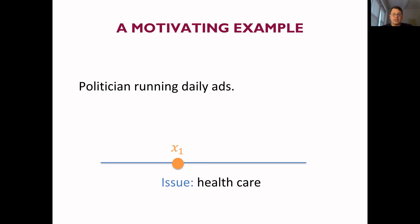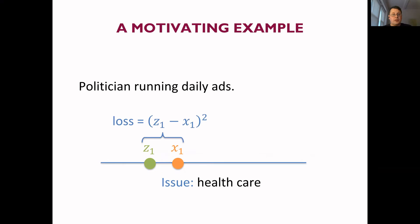We can think of there being a public sentiment about health care from likely voters, which in this toy example we'll represent as one-dimensional — you spend more on health care, you spend less on health care. So there's some state of the world, let's call it X. What the politician would like to do is run an ad that resonates with the public sentiment. They take some ad which takes a stance on this issue, represented by some Z. They'd like Z and X to be close to each other. So the politician suffers some loss which grows quadratically with the distance between the stance they took and public sentiment.